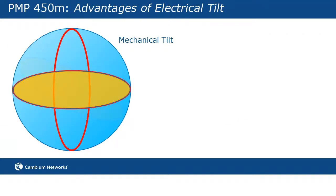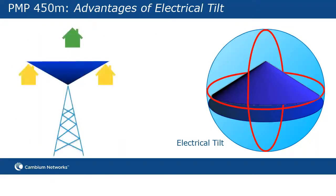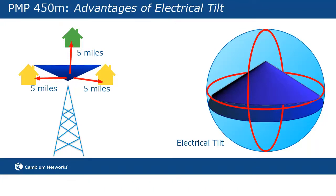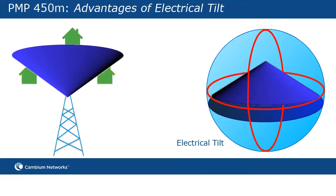The advantage of electrical tilt is that it actually allows the antenna pattern to be reshaped to better suit the real world. With a traditional antenna, if the peak of the beam in elevation is centered on an SM at 5 miles, then SMs on the edge at 5 miles are being overshot by the peak of the beam. Electrical down tilt allows the antenna to be reshaped to follow the curve of the sector and optimize performance throughout the sector rather than just the main part of the beam.